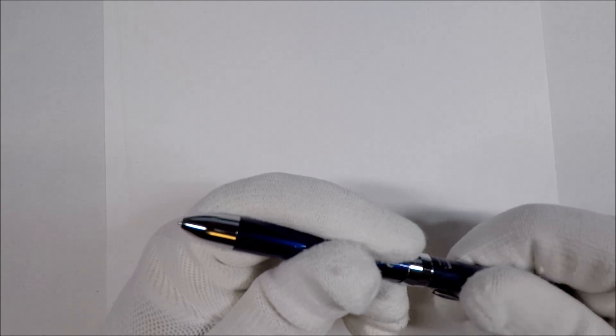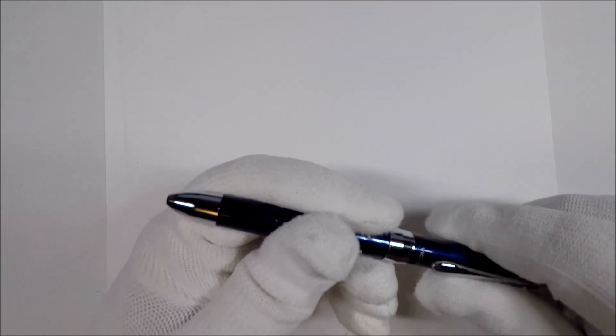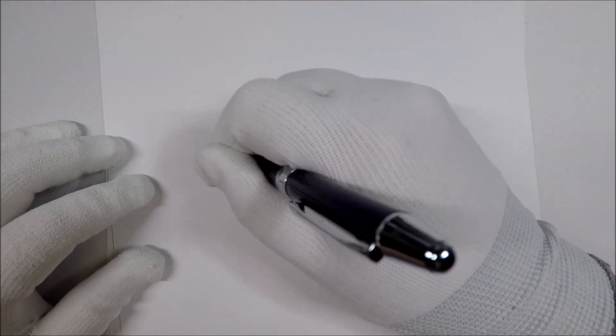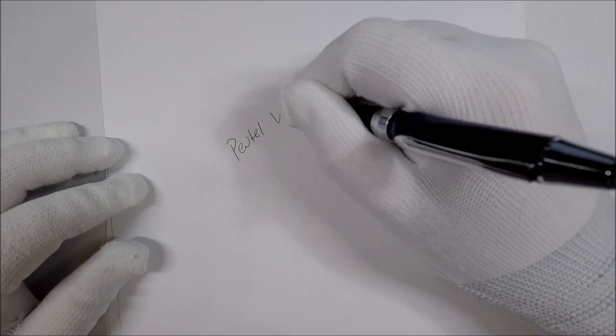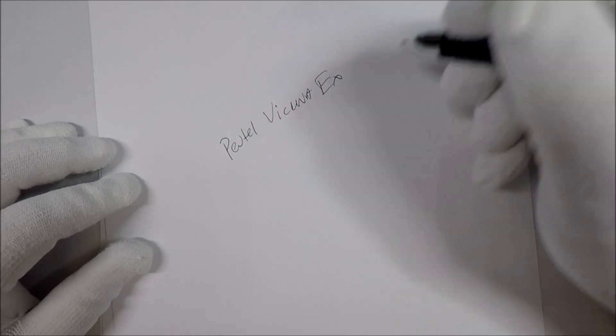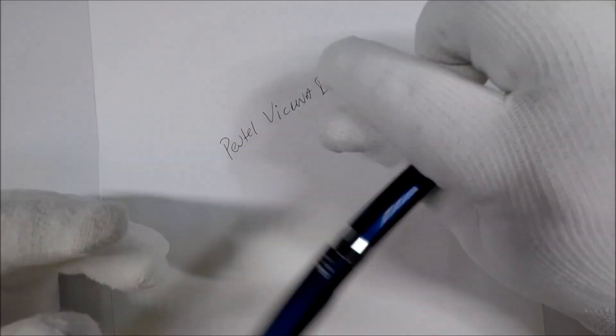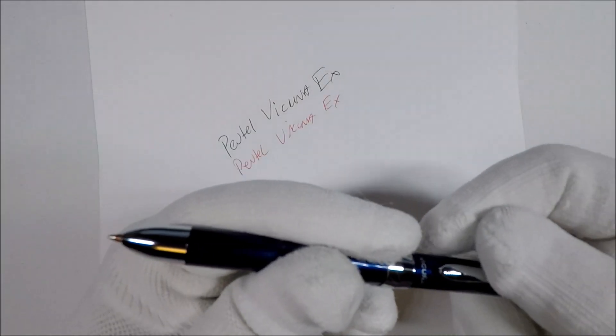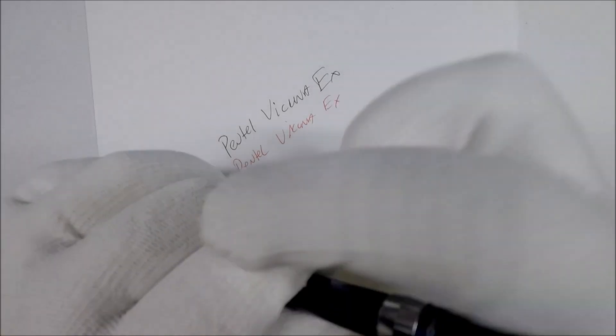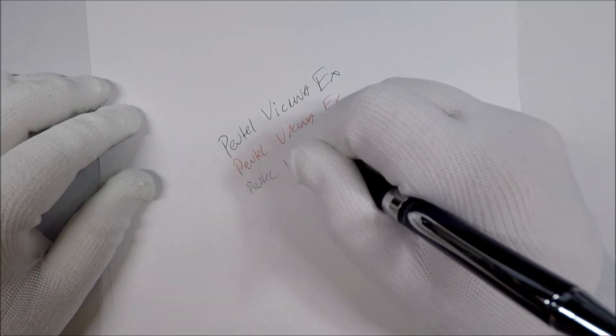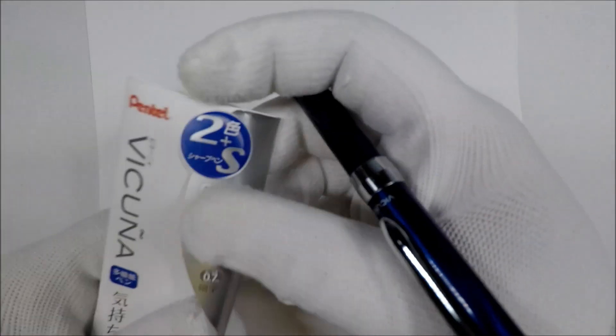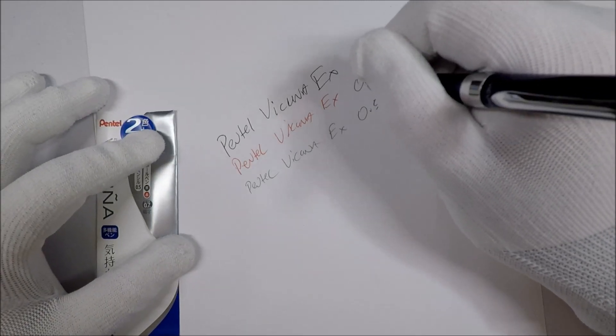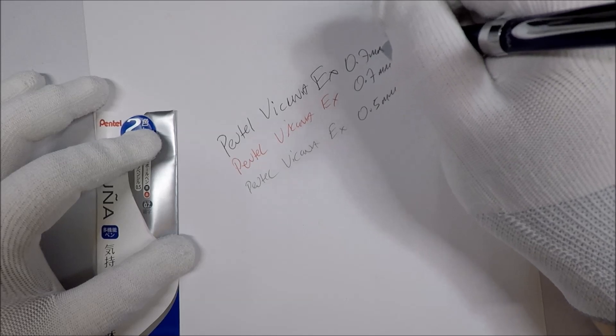So, pencil, black, and red. This is the Pentel Vicuna EX. The pencil part is 0.5 millimeters and both of the pens are 0.7 millimeters.